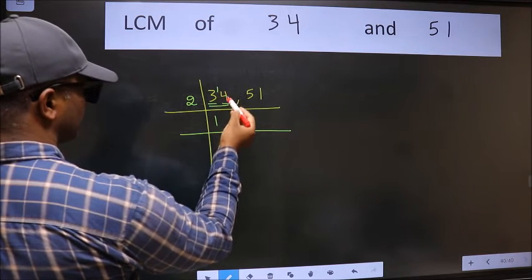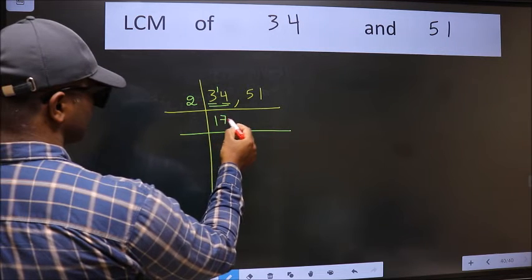3 minus 2 is 1, 1 carried forward makes 14. When do we get 14 in the 2 table? 2 times 7 is 14.